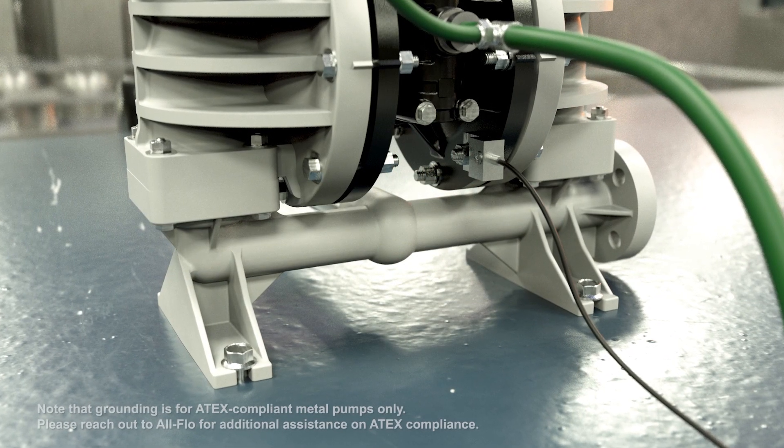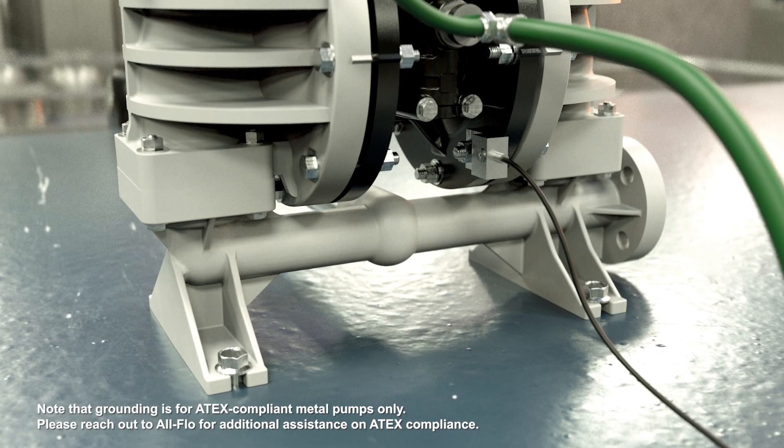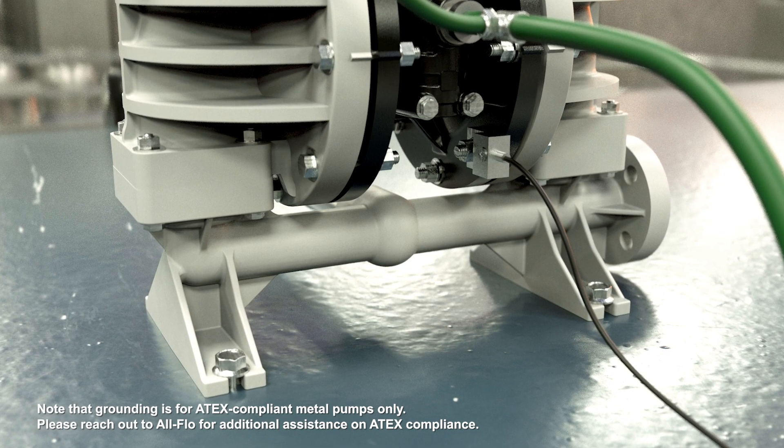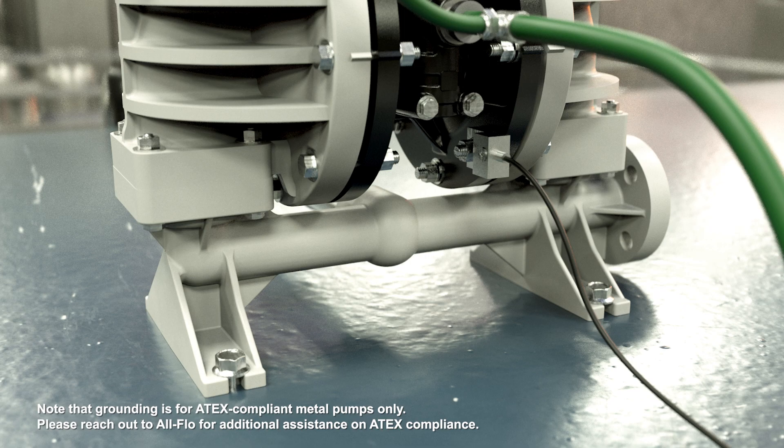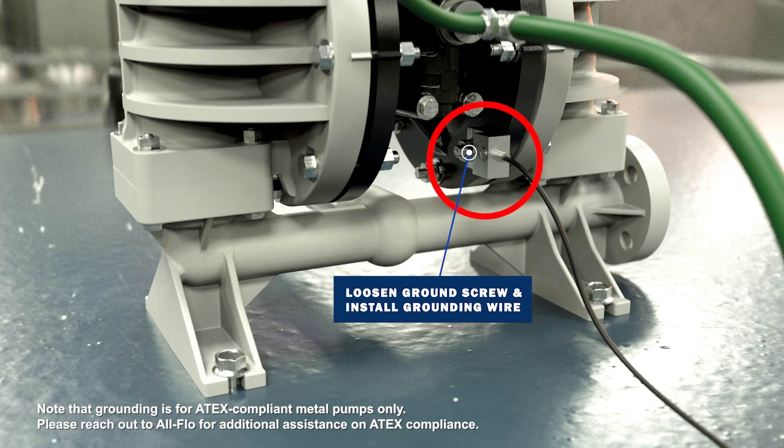For applications that handle flammable fluids and or wherever static electricity is a hazard, the pump as well as the surrounding equipment must be properly grounded. To ground the pump, loosen the grounding screw and install a grounding wire. Tighten the grounding screw.